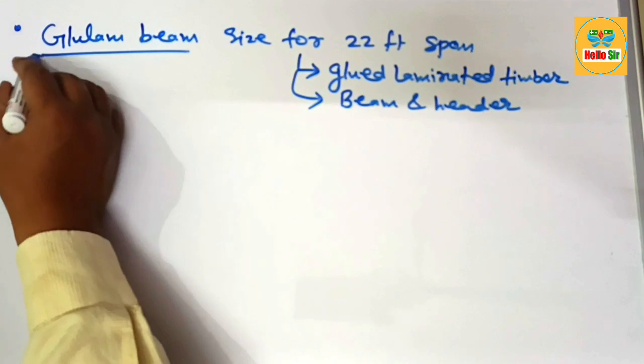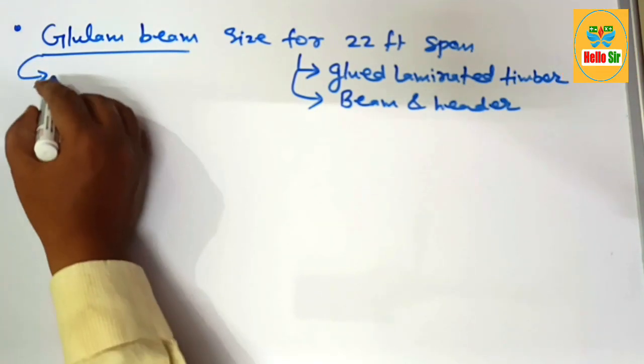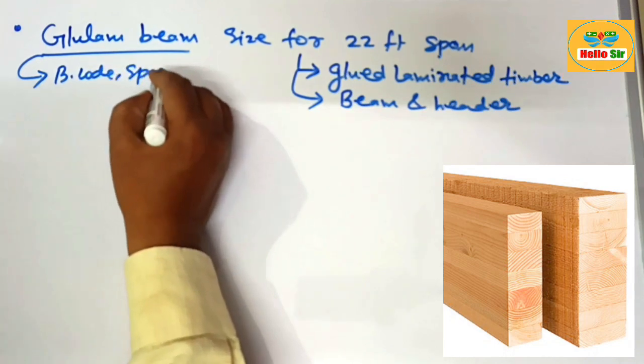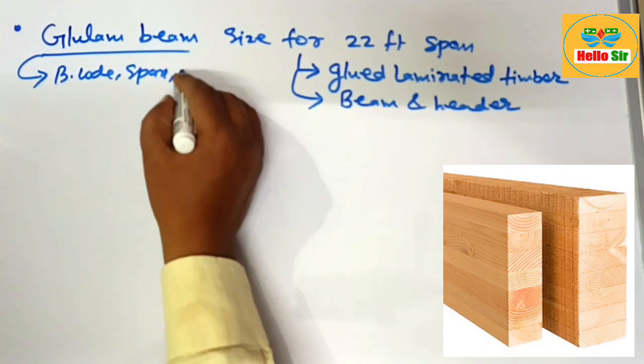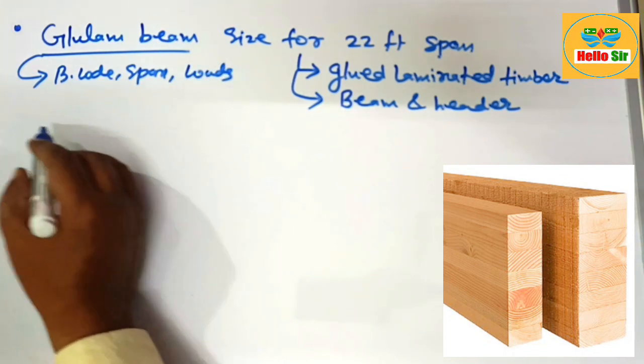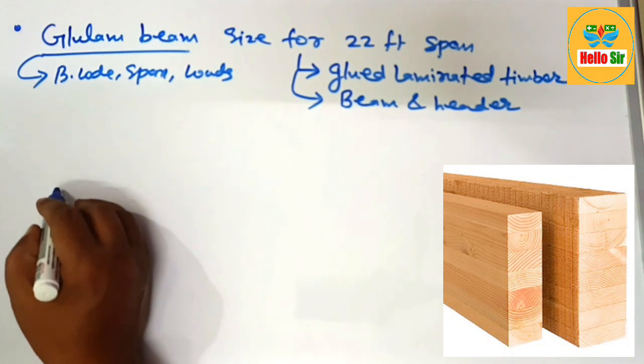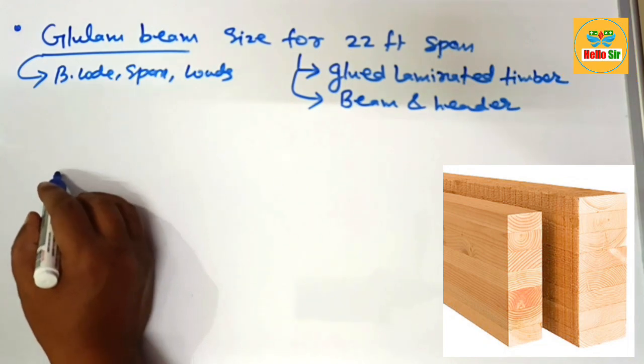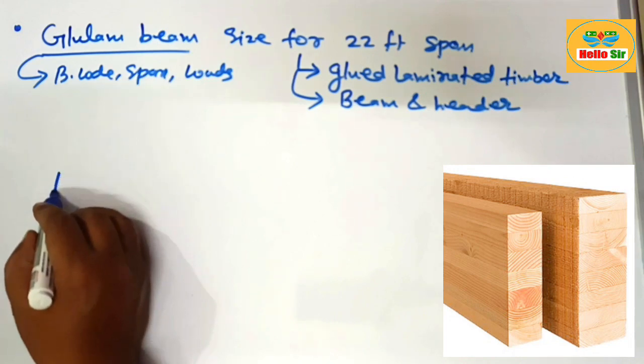You know that the correct glulam beam size depends on many factors like building code, the span length of the beam and the load condition, specific requirements and many other factors. First you understand about the length, width and depth section of the beam.